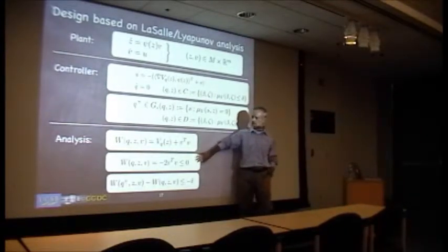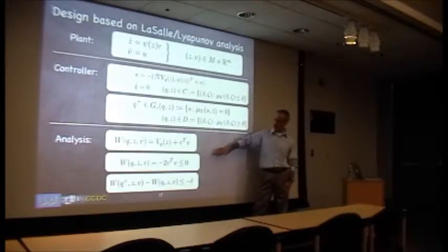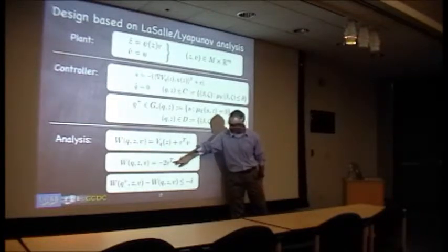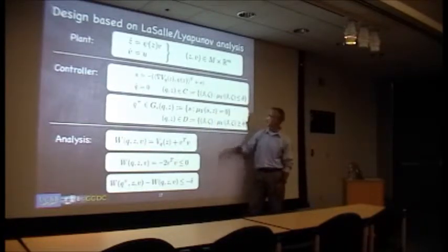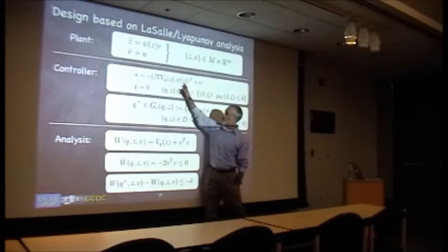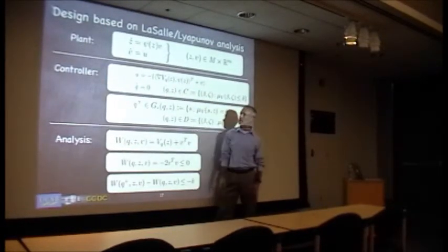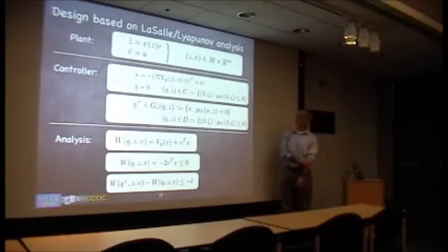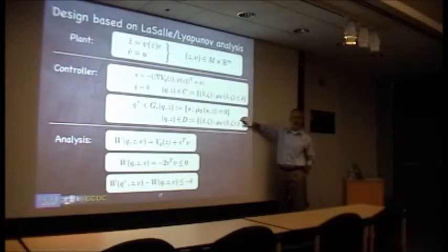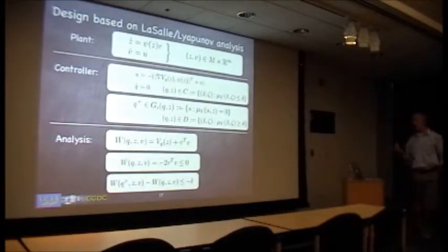Then you can apply this invariance principle that I alluded to before to prove that you never get stuck flowing at any nonzero condition. You're guaranteed that you'll converge down to where the v's are zero, and you can't get stuck at v equals zero because there's going to be this driving term in the v-dot equation. The only place where that driving term can be zero is if you're supposed to be jumping rather than flowing.